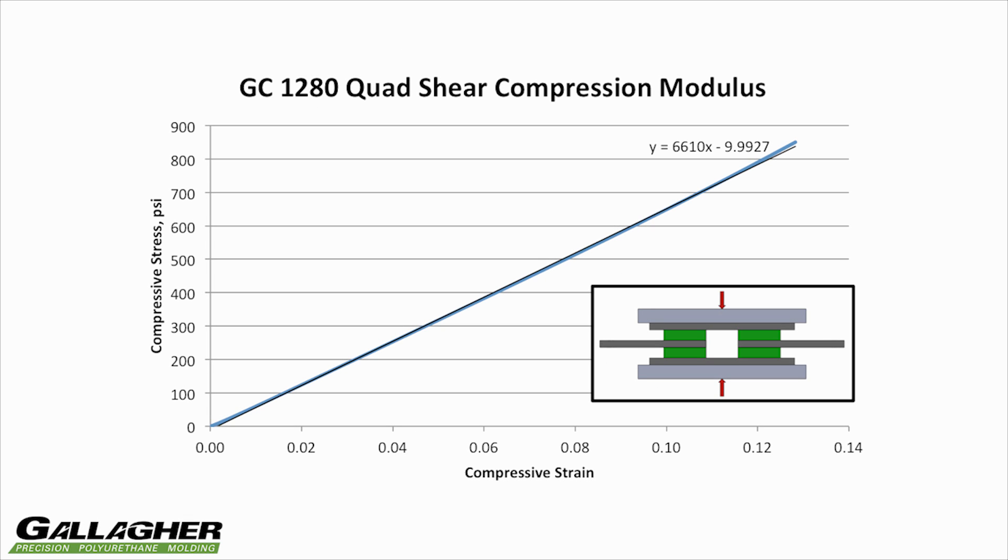This is the stress-strain curve for our compression test, with a line of best fit. The compression modulus is equal to the slope of this line, or approximately 6600 psi. The fact that the compression modulus is much larger than the shear modulus shows that polyurethanes are much stiffer in compression than in shear.